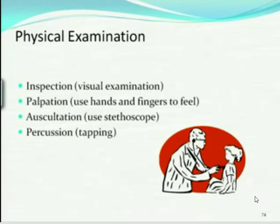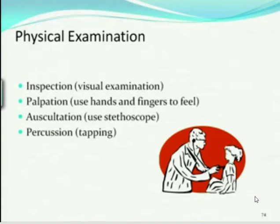Auscultation is using a stethoscope to listen to the chest, and that's what this simple diagram is showing. And then percussion — we're using the hands but we're tapping, more than just feeling; they're actually tapping like a drum. So, physical examination: inspection, palpation, auscultation, and percussion.